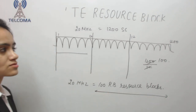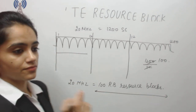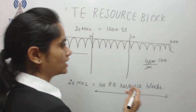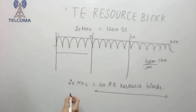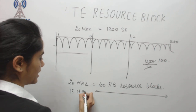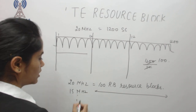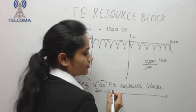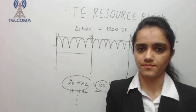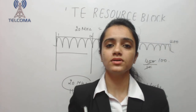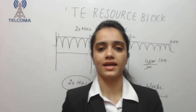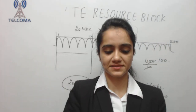So a resource block is a unit of frequency and time which carries our data. We calculated 100 RBs for 20 MHz, and similarly we can calculate for different bandwidths. The more the bandwidth, the more the number of resource blocks, and the more the capacity. This concludes the LTE resource block class. Thank you.